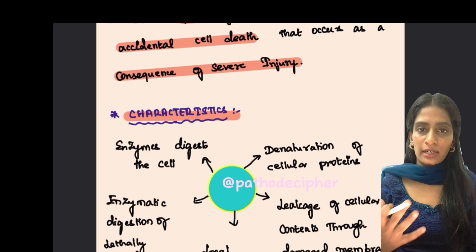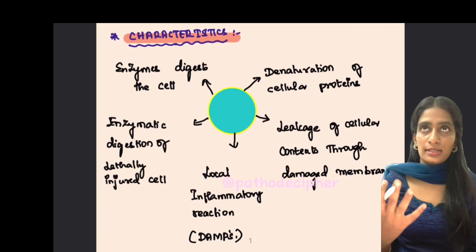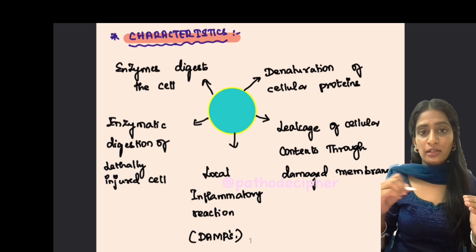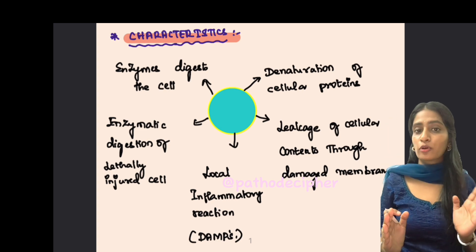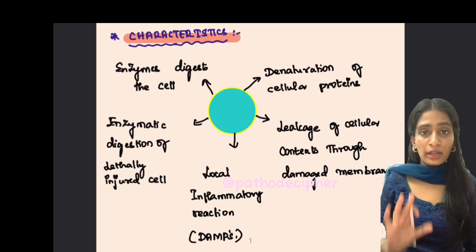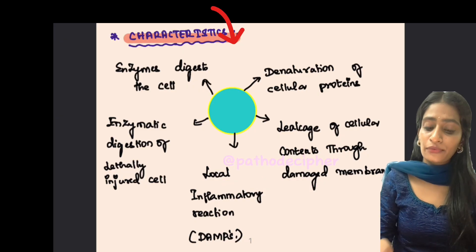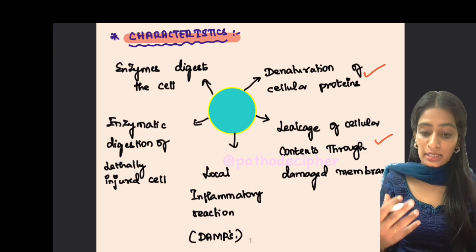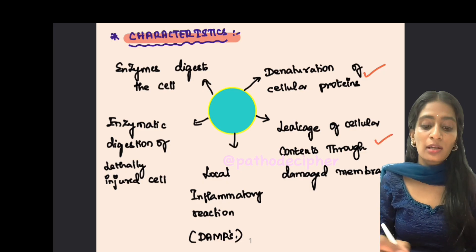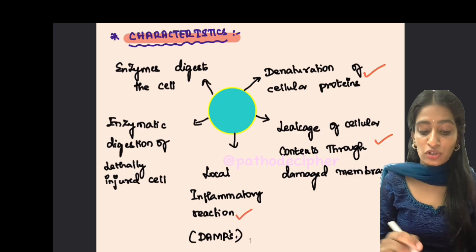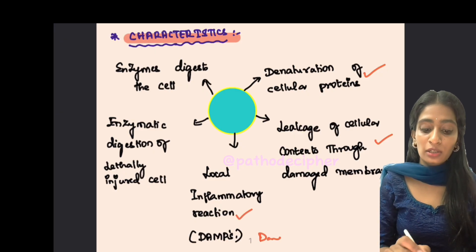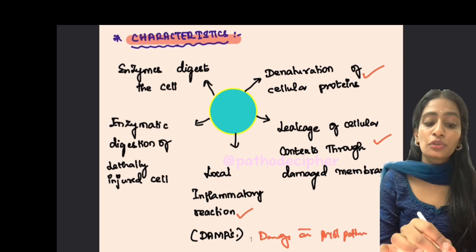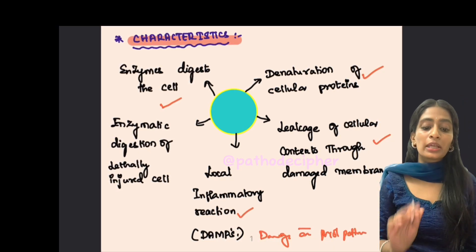The characteristics of necrosis are like a checklist for diagnosis. The first is denaturation of cellular proteins. The second is leakage of cellular contents through the damaged membrane. Third, there will be a local inflammatory reaction due to DAMPs — Damage Associated Molecular Patterns. Finally, there will be enzymatic digestion of the cell. These are the four key features of necrosis.